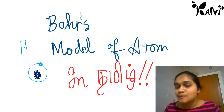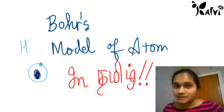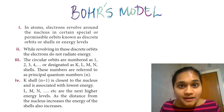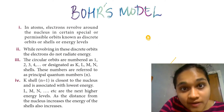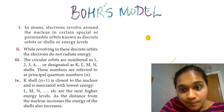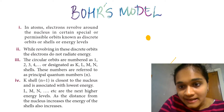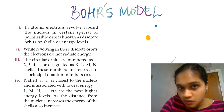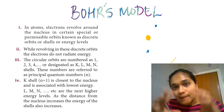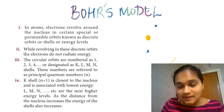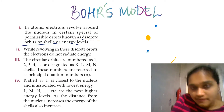We are talking about Niels Bohr and his model. Bohr says that in an atom, the nucleus is positively charged. Electrons are negatively charged. They are negative.